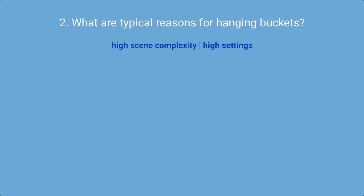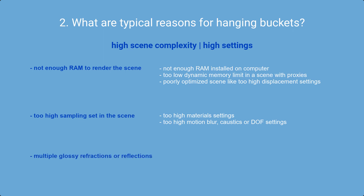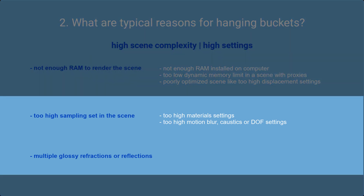The second group of reasons is high scene complexity or too-high quality settings. This includes not enough memory — for example, too small a dynamic memory limit in scenes with lots of V-Ray proxies — or too-high sampling set for glossy reflections, refractions, caustics, or subsurface scattering. It can also happen that scene objects enter a loop of glossy reflections or refractions that takes very long to render.